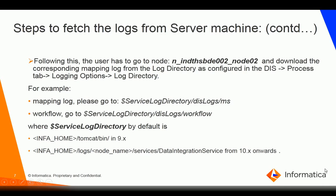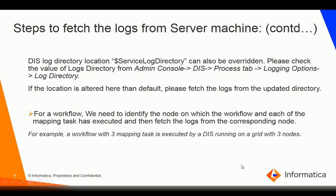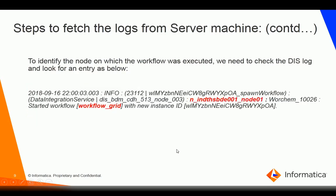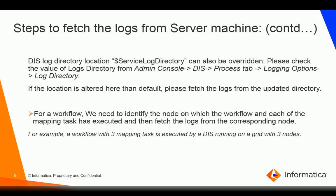Now, coming to the steps to fetch the log: once I have identified the log directory for the DIS and know the node on which the job has been dispatched, I log into that node and go to the logs directory location to download the log. Let's take an example where I have a workflow with three mapping tasks and I have run the workflow with the DIS running on a grid. The scenario is: I want to fetch the logs for the workflow as well as the mapping tasks by logging into the node.